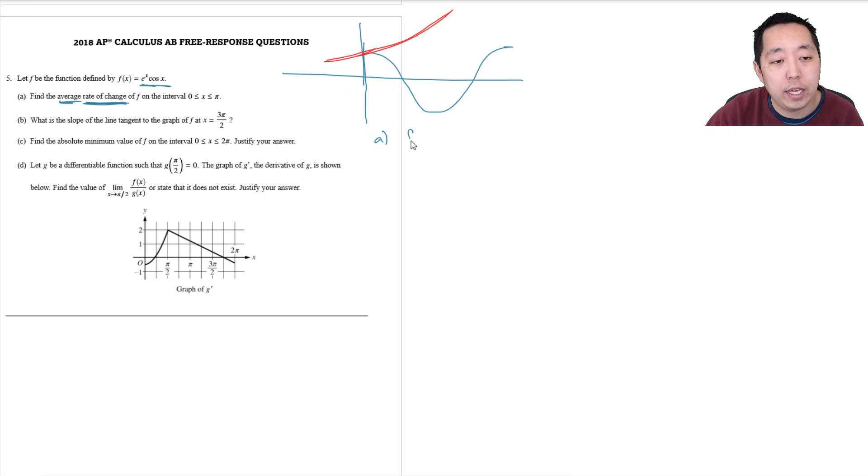So the slope I do for part A is I do f of pi minus f of 0 over pi minus 0 and that's equal to e to the pi cosine pi minus e to the 0 cosine 0 divided by pi. And that will give me cosine of pi is negative 1 so that's negative e to the pi minus e to the 0 is 1 and cosine of 0 is also 1 so it's just minus 1 over pi.